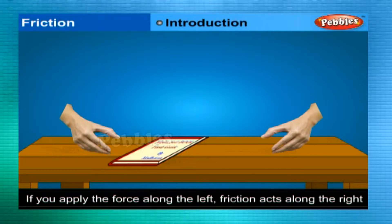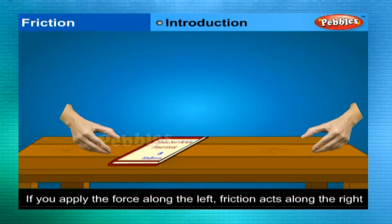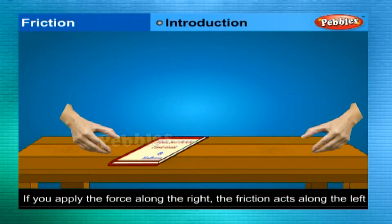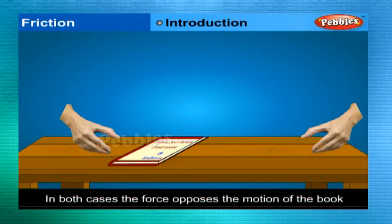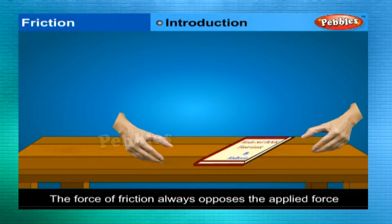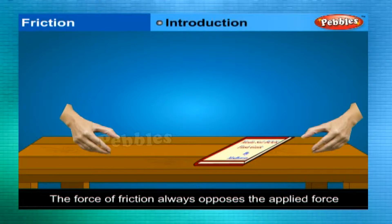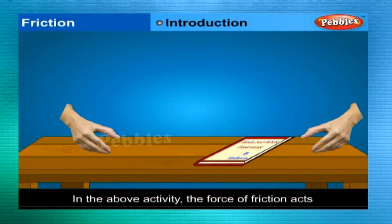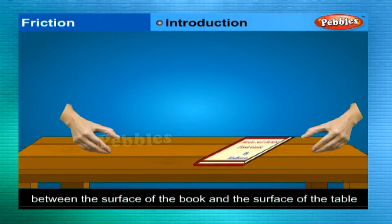If you apply the force along the right, the friction acts along the left direction. In both cases, the force opposes the motion of the book. The force of friction always opposes the applied force. The force of friction acts between the surface of the book and the surface of the table.